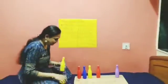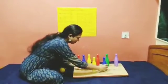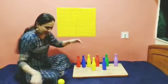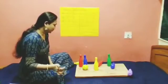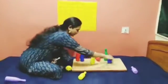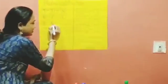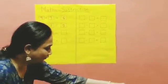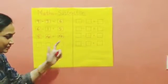Now let's add some more bottles. How many bottles are there? Let's count: 1, 2, 3, 4, 5, 6, 7, 8. 8 bottles are there. Let's throw the ball. How many bottles fell down? 1, 2, 3, 4. So 4 bottles fell down. And how many remained? 1, 2, 3, 4. So 4 left. So 8 minus 4 is 4.